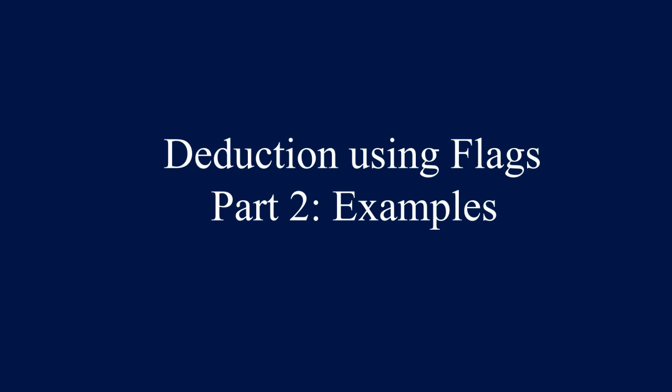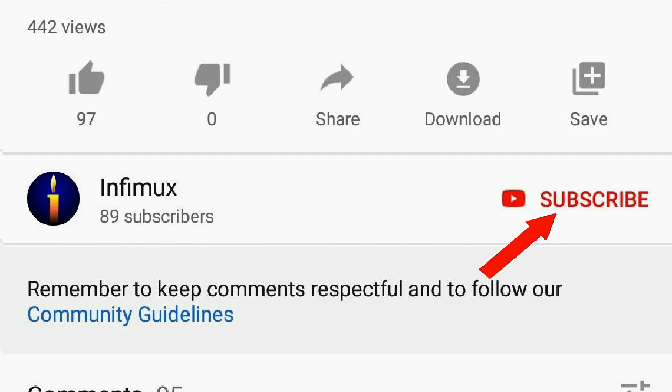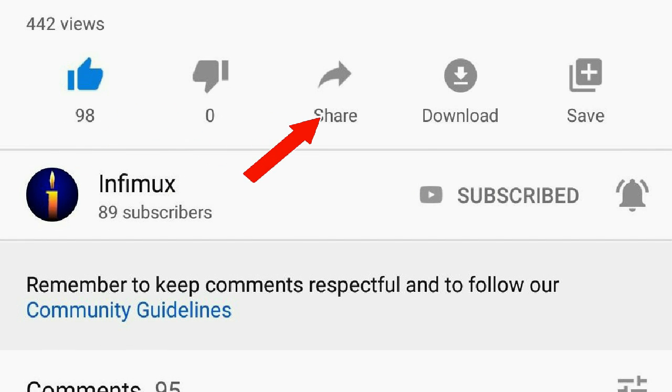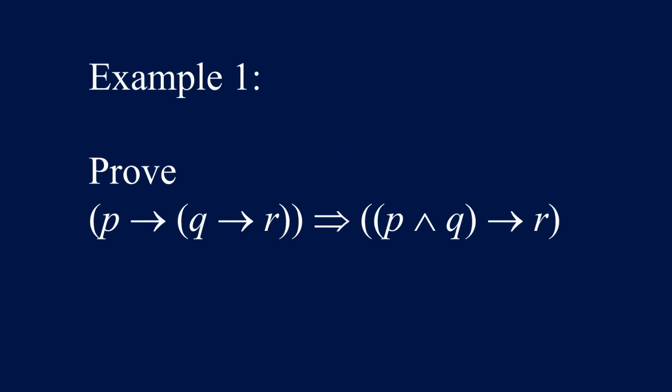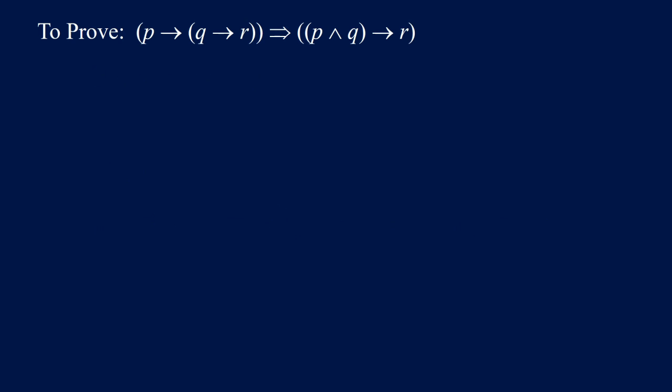In this video we are going to talk about two examples about deduction using flags in logic. Example one: prove that the following is a logical implication — (P implies (Q implies R)) implies ((P and Q) implies R). That is what we are going to prove, and here is the proof.